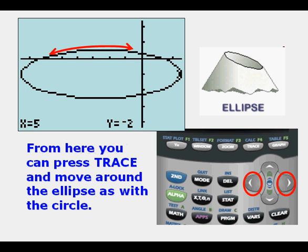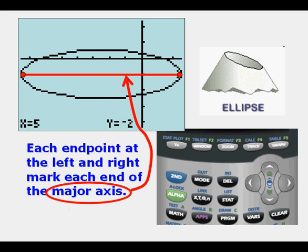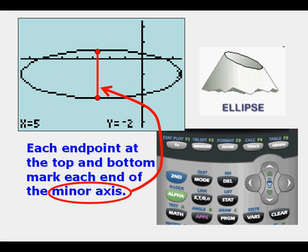From here we can press Trace and move around the ellipse as with the circle. Each endpoint at the left and right mark each end of the major axis. Each endpoint at the top and bottom mark each end of the minor axis.